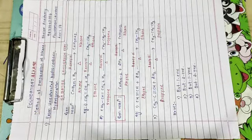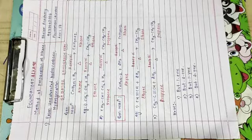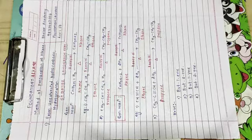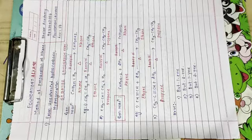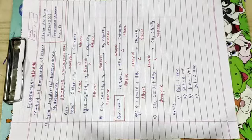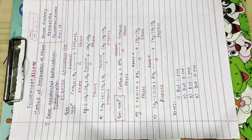Now what do I mean by unsaturated? Unsaturated can be either alkene or alkyne. So the very first method to prepare alkane is from unsaturated hydrocarbon.